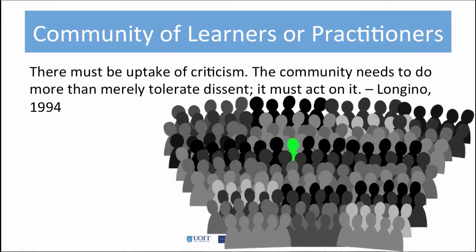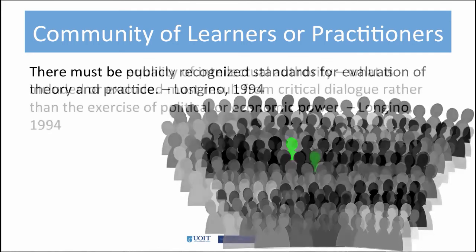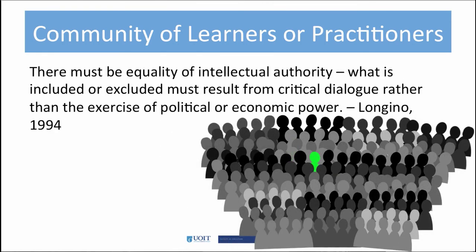There must be an uptake of criticism — the community must have the means and the ability to act on critiques. There must also be publicly recognized standards for evaluation of theory and practice; we will have review forms to work with. Finally, there must be equality of intellectual authority. This helps us define what is included or excluded that results from our critical dialogue. So why is this important to you? Because these are the four conditions under which all students are required to participate in an online community of learners.